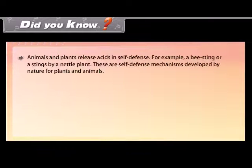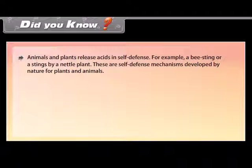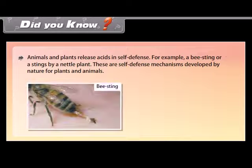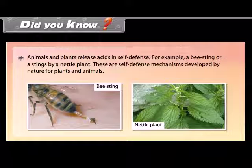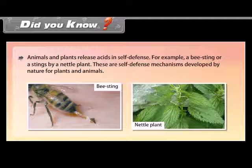Animals and plants release acids in self-defense — for example, a bee sting or stings by a nettle plant. These are self-defense mechanisms developed by nature for plants and animals.